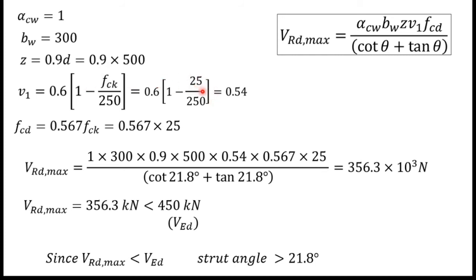Substituting all values into the VRd,max equation and simplifying gives VRd,max = 356.3 kN. Since VRd,max = 356.3 kN is less than VEd = 450 kN, we need to recalculate the angle θ.